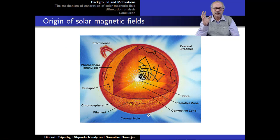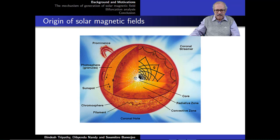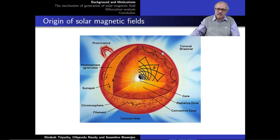To understand how magnetic fields are created and how they change, consider the sun's interior. At the center, thermonuclear reactions generate energy transferred to the surface by two means: radiation and convection. In the core, convection cannot happen, so energy transport is only by radiation — this is called the radiative core, covering about 70% of the radius. The remaining 30% has convection: this is the convective zone, where all solar magnetic activity happens. We focus our attention on the convective zone.